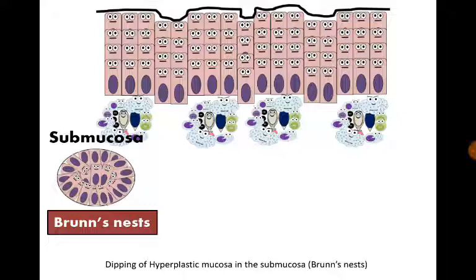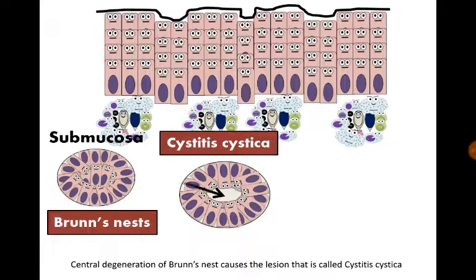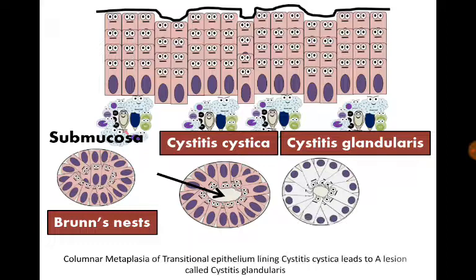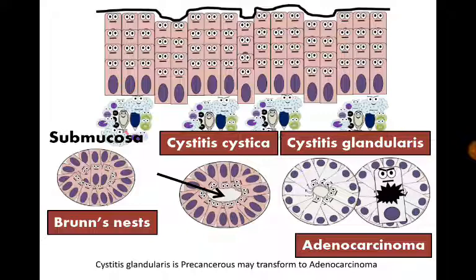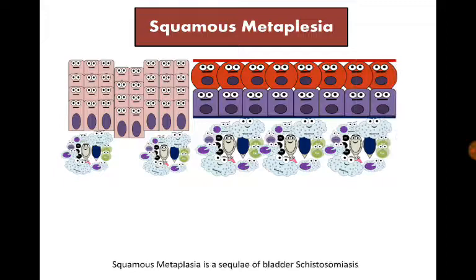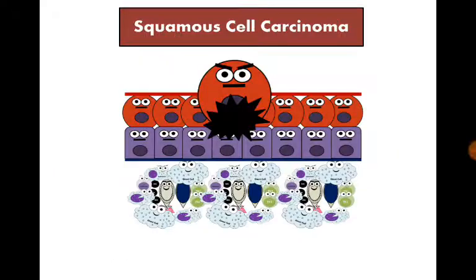Dipping of hyperplastic mucosa into the submucosa, called Brunn's nests. Central degeneration of Brunn's nests causes the lesion called cystitis cystica. Columnar metaplasia of transitional epithelium lining cystitis cystica leads to a lesion called cystitis glandularis. Cystitis glandularis is precancerous and may transform to adenocarcinoma. Squamous metaplasia is a sequela of bladder schistosomiasis and is precancerous, and can cause squamous cell carcinoma.